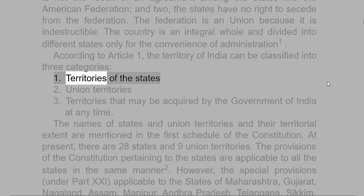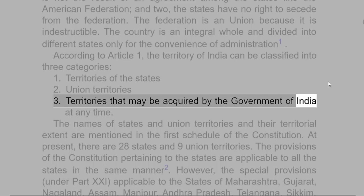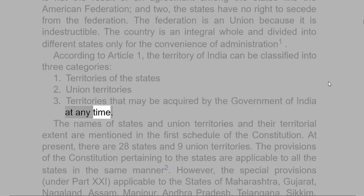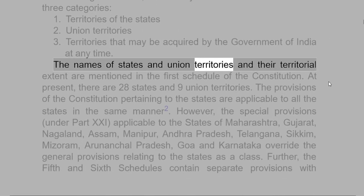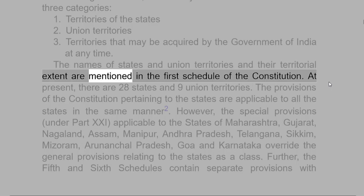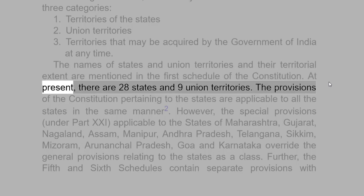The three categories are: (1) Territories of the States, (2) Union Territories, and (3) Territories that may be acquired by the Government of India at any time. The names of states and Union Territories and their territorial extent are mentioned in the First Schedule of the Constitution. At present, there are 28 states and 9 Union Territories.